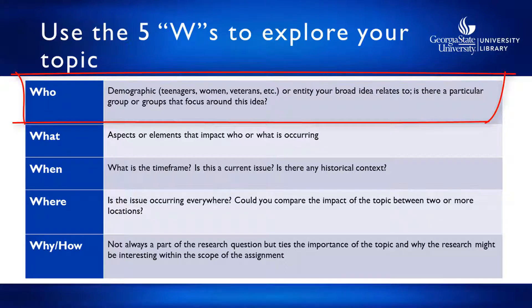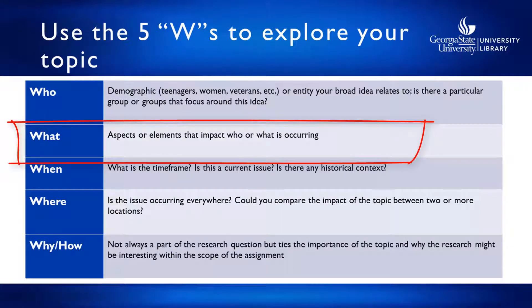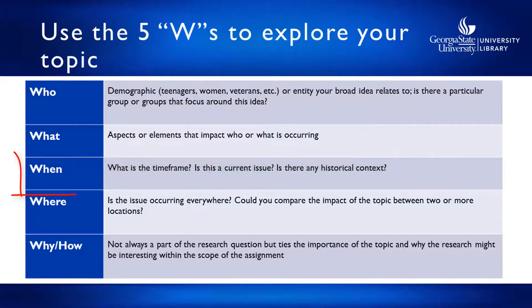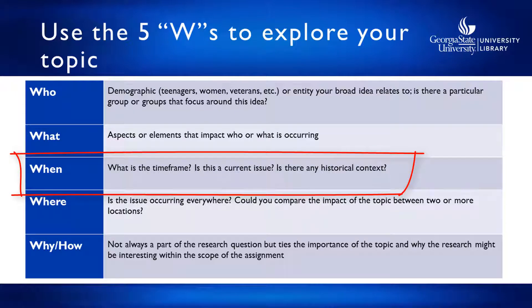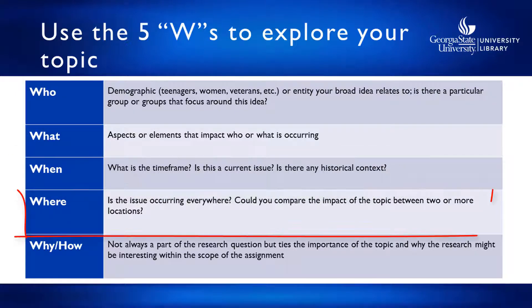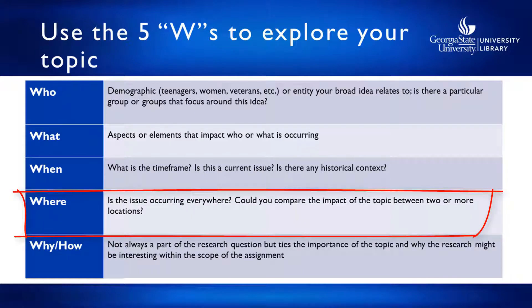Who refers to the demographic or entity that your broad idea relates to. Is there a particular group or groups focused around this idea? For example, teenagers, men, residents of Georgia, etc. What involves the aspects, elements, or events that impact the who. When relates to time frame — is this a current issue or is there a historical context? Where asks where the issue is happening. Is the issue happening everywhere? Would it help to compare two locations, or should you focus on a specific area like Metro Atlanta?